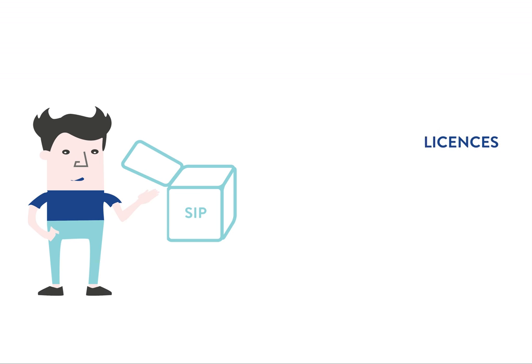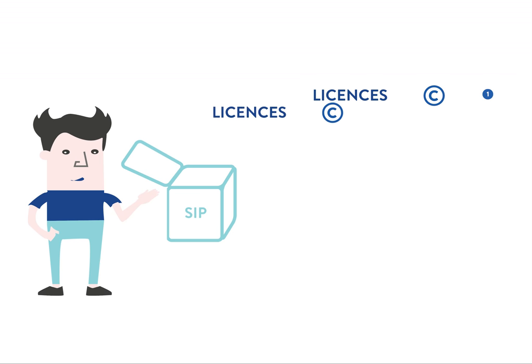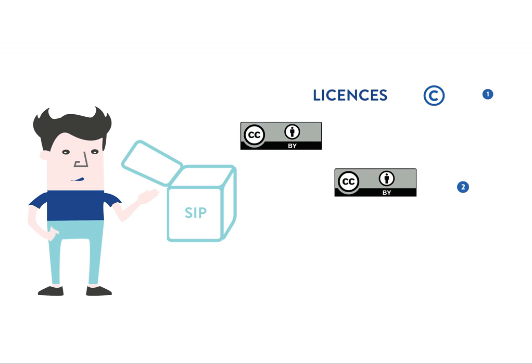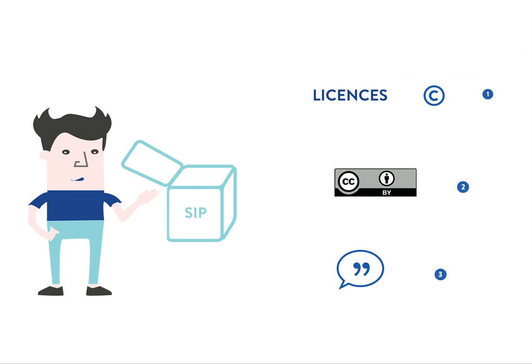Information about what access restrictions and which license apply to the collection is needed as well. Since Dante hopes his data might not just be useful for fellow scientists but may be reused even in commercial applications, he allows public access with a CC BY license. This permissive license allows anybody to access the data and use it as they like, as long as they indicate that the data was created by Dante.